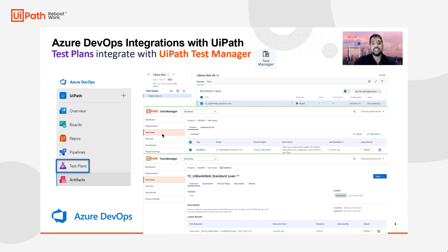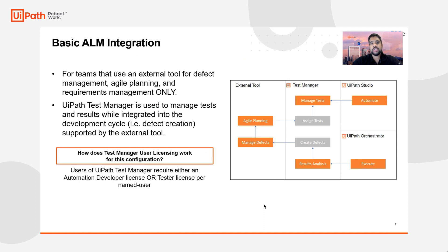This allows the developer to then associate an automation directly with the test case. All test execution results are passed back directly to Azure DevOps test plans. With UiPath Test Manager, there are two types of ALM integrations. The first is a basic ALM integration. In this scenario, ADO, being the external tool, would be used for defect management, agile planning, and overall requirements management only. UiPath Test Manager would act as the test management system, helping you with test planning and results analysis, and it would integrate allowing you to create defects directly from the UiPath Test Manager UI into the external tool. From a licensing perspective, users of UiPath Test Manager would require automation developer licenses or a tester user license per named user, and organizations would work with ADO to understand licensing there.